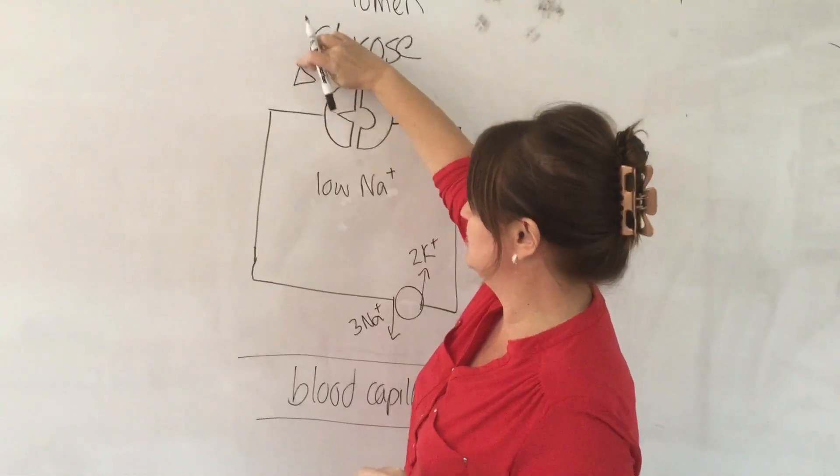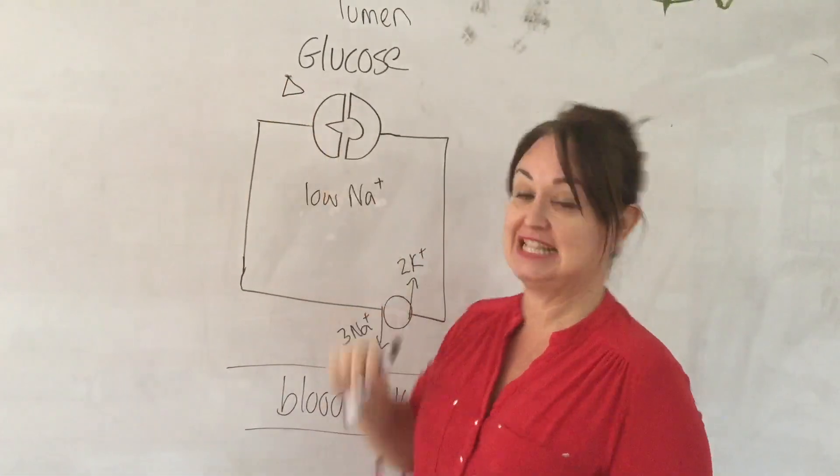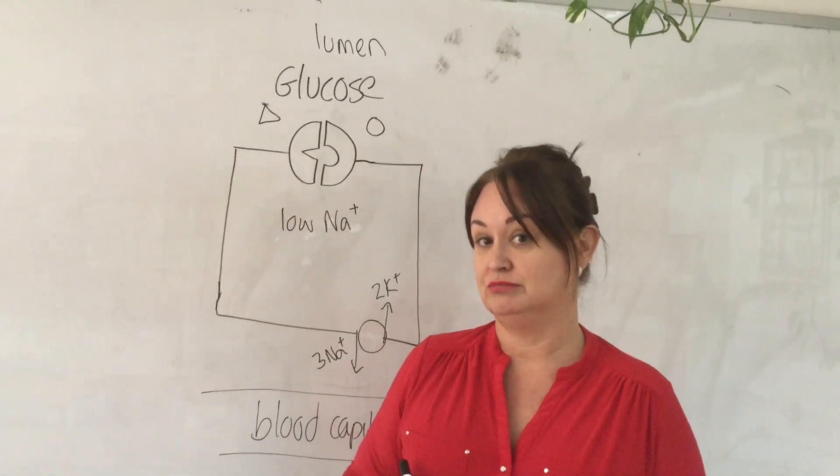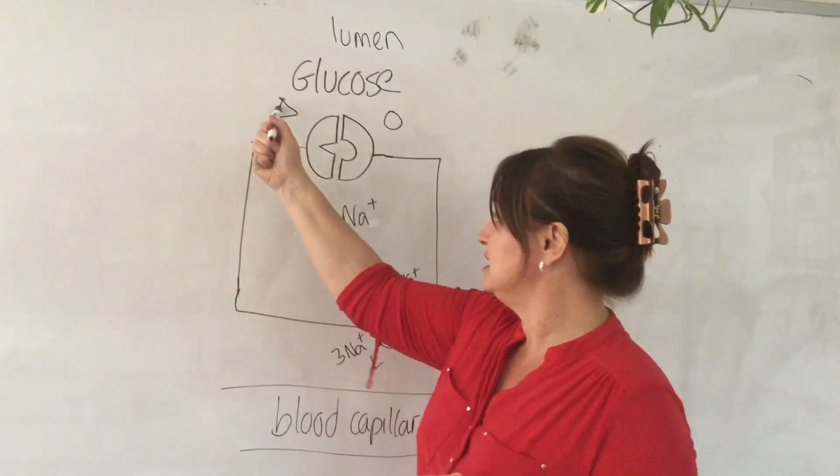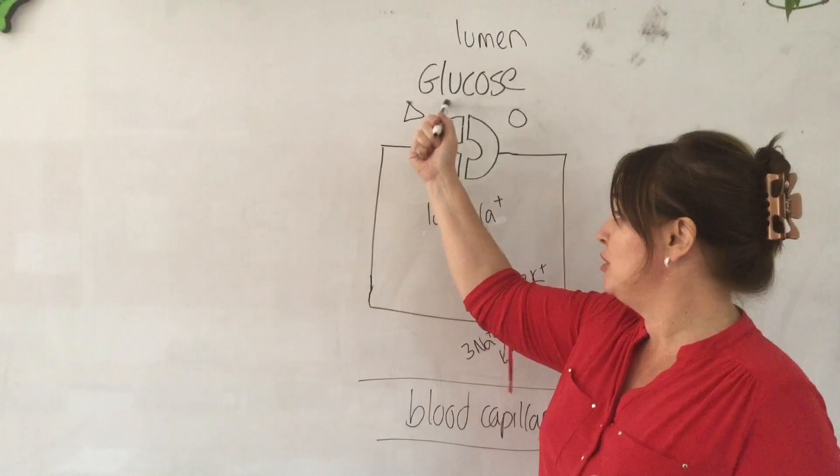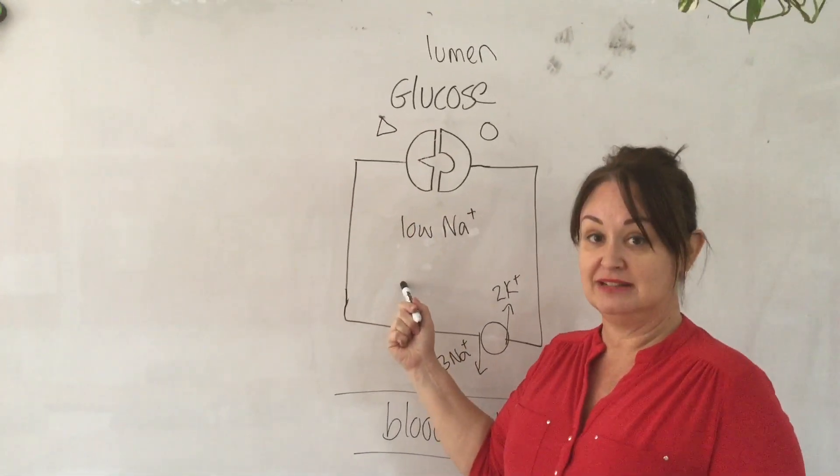It will only transport the sodium across. Let's imagine the sodium is this shape. And that fits into there. If it transports glucose across too. So, for this to move into here, it brings the glucose with it. Both of them move into the epithelial cell.